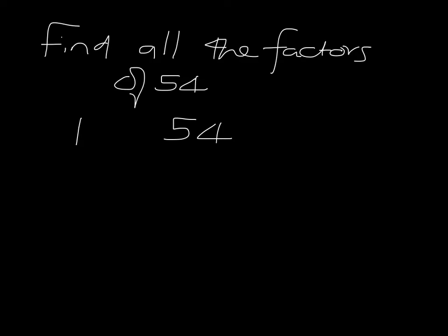The next number to check is 2. Does it go into 54? Well, obviously it will. 54 is an even number, so 2 must go into it. To find its partner number, we're asking ourselves 2 multiplied by what will give us 54. The easy way to get that is just to divide 2 into 54. We say 2 goes into 5 twice remainder 1, 2 goes into 14 seven times and so our partner is 27.